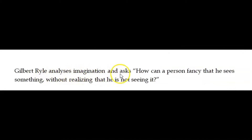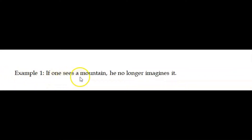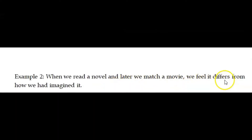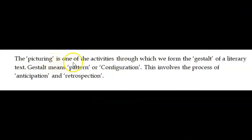Another scholar, Gilbert Ryle, is brought into the argument. Ryle analyzes imagination by asking: how can a person fancy that he sees something without realizing that he is not seeing it? For example, when one sees a mountain, he no longer imagines it. When we read a novel and later watch a movie based on the novel, we feel it differs from how we had imagined it. This picturing and visualization is one of the activities through which we form the gestalt of a literary text.